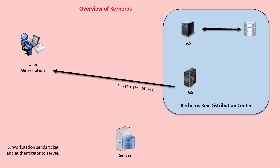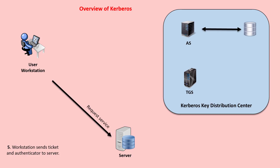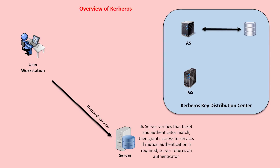Then, the workstation sends the ticket received in step 4 and an authenticator to the server. The ticket and authenticator form a service request. Lastly, the server verifies that the ticket and authenticator match, then grants access to the service. If mutual authentication is required, the server returns an authenticator.